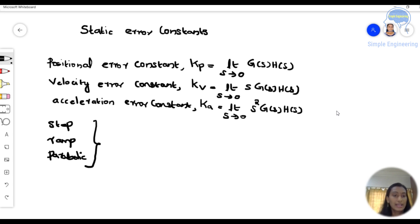Today we are going to consider about these three: step, ramp and parabolic. So, the static error constant, that steady state error value, depends on these three input signals and the type number.